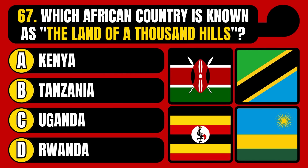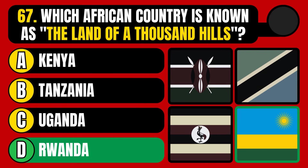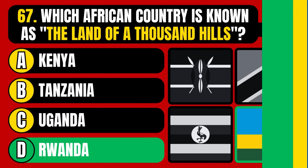Which African country is known as the land of a thousand hills? Kenya, Tanzania, Uganda, or Rwanda? The correct answer is option D, Rwanda.